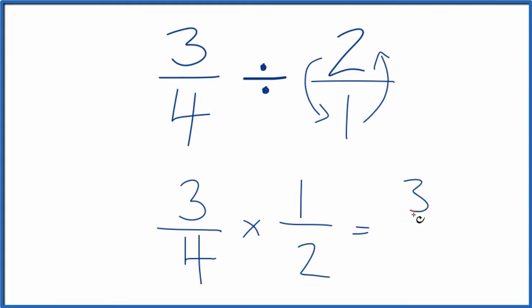So 3 times 1, that's 3. 4 times 2 is 8. And we've divided 3 fourths by 2. We get 3 eighths.